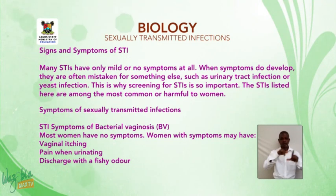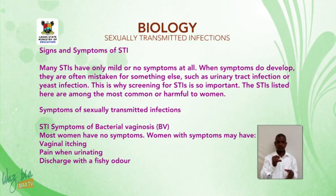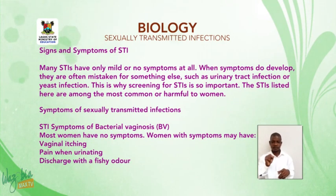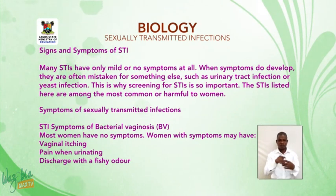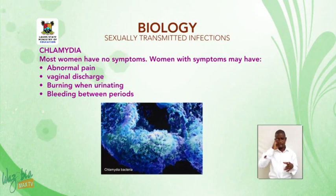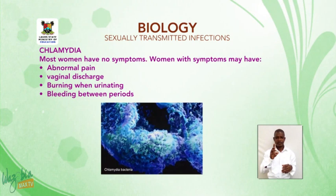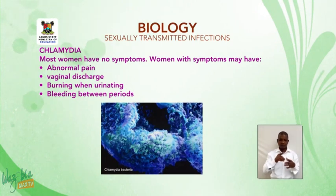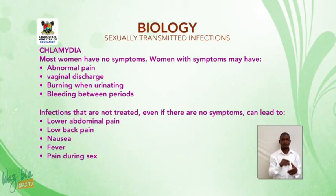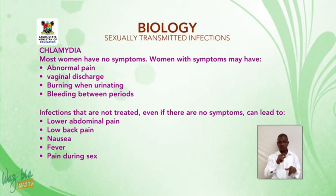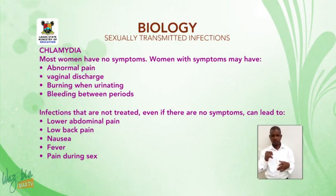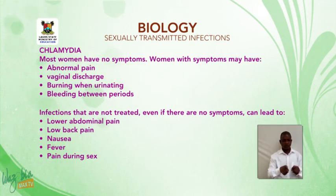Symptoms of bacterial vaginosis (BV): most women have no symptoms. Women with symptoms may have vaginal itching, pain when urinating, and discharge with a foul odor. For chlamydia, most women have no symptoms. Women with symptoms may have abdominal pain, vaginal discharge, burning when urinating, or bleeding between menstrual periods. Infections that are not treated, even if there are no symptoms, can lead to lower abdominal pain, low back pain, nausea, fever, and pain during sex.